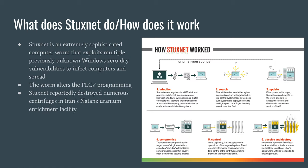Stuxnet is a computer worm that was originally aimed at Iran's nuclear facilities and has since mutated and spread to other industrial and energy-producing facilities. The original Stuxnet malware attack targeted the programmable logic controllers, or PLCs, used to automate machine processes. PLCs are how computers interact with and control industrial machinery like uranium centrifuges. The worm alters the PLC's programming, resulting in the centrifuges being spun too quickly and for too long, damaging or destroying the delicate equipment in the process.